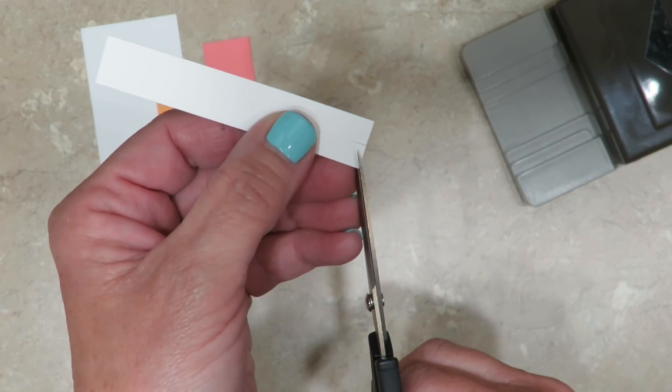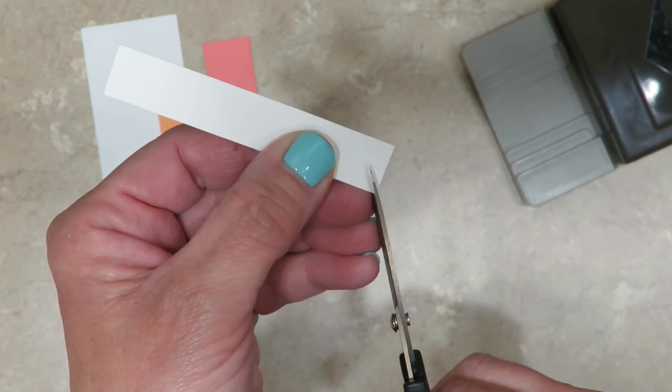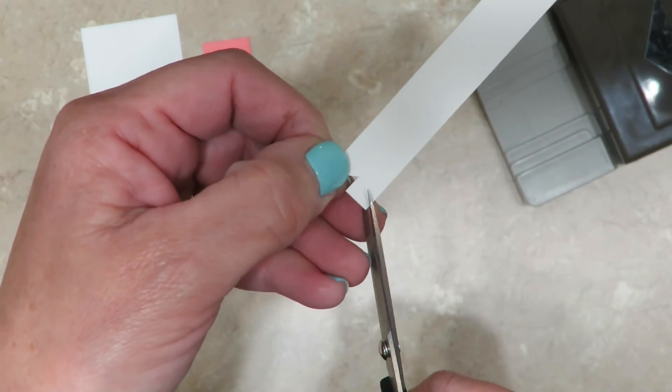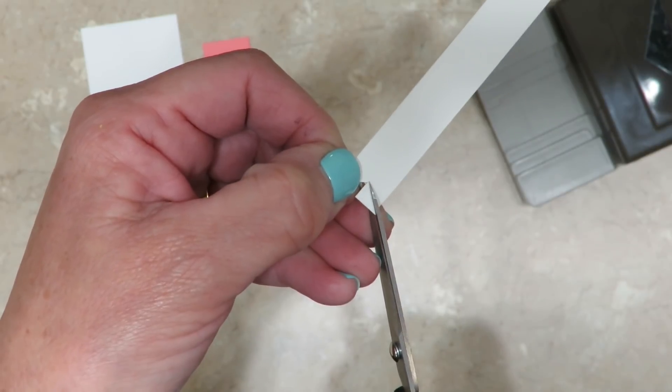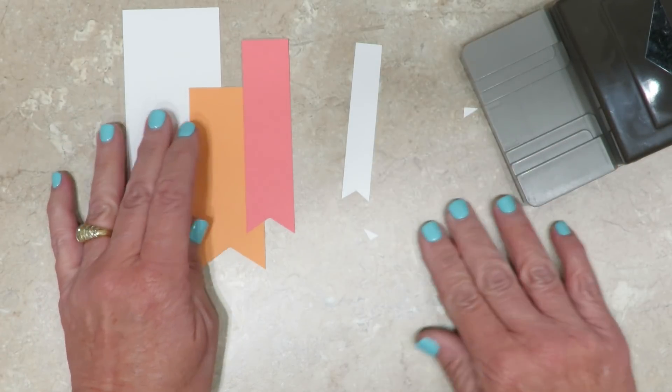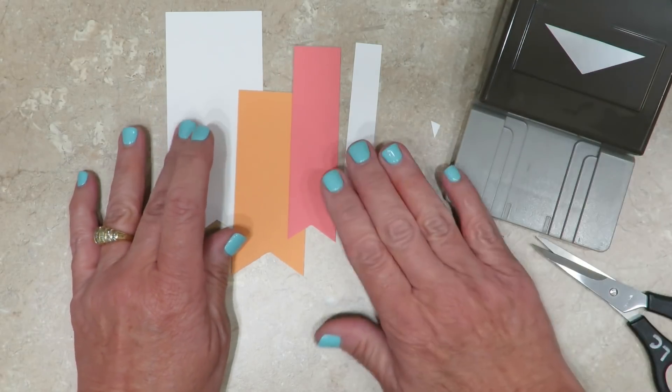And then you're going to come from the outside edge of the cardstock with your scissors from the corner right up to the top of that slit. Then you're going to turn it and do the exact same thing on the other side. And look at that. Every single time you're going to have a perfect banner tip whether you have the banner triple punch or not.